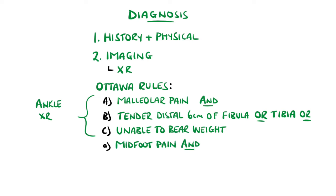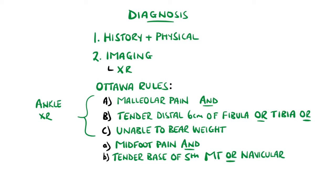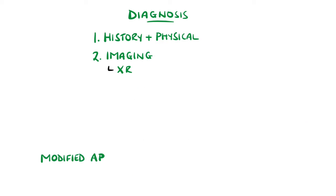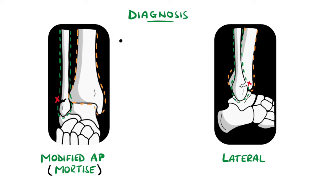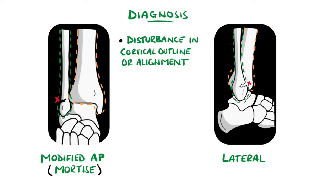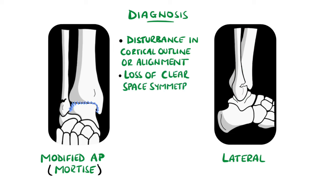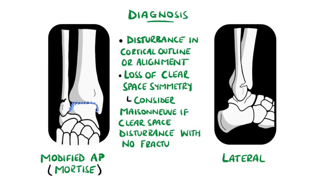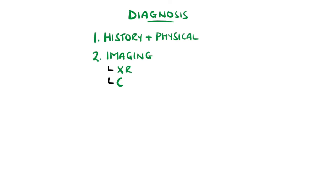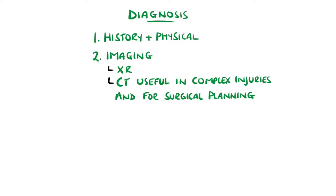A foot x-ray would also be indicated if there is pain in the midfoot and either tenderness on the base of the 5th metatarsal or the navicular bone. The typical views used are a modified AP view and lateral view; weight-bearing or stress views are used in some cases. A fracture is indicated by a disturbance in the normal cortical outline or alignment of the bones. The clear space around the talus may be disrupted — for example, widening of the medial clear space suggests injury to the syndesmosis. If there is widening throughout but no clear fracture, the proximal bones should be checked as it could be a Maisonneuve fracture. CT is useful in planning operations, especially in complex fractures like trimalleolar fractures, and MRI is used to evaluate soft tissue injuries.